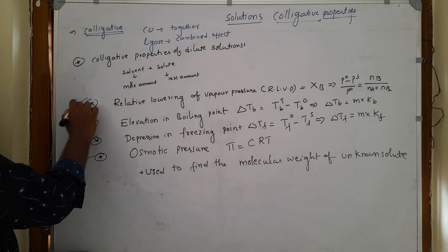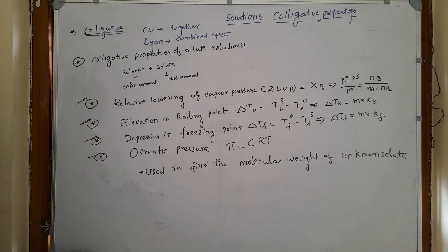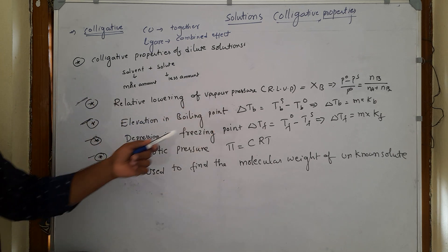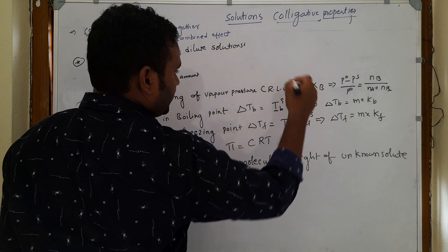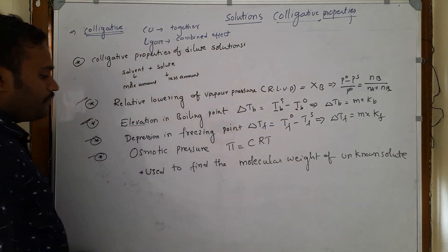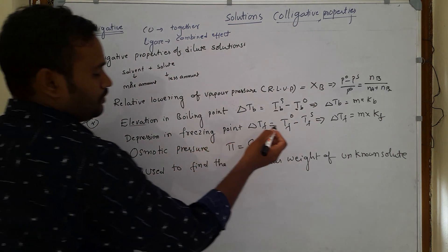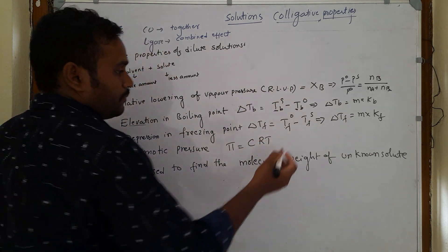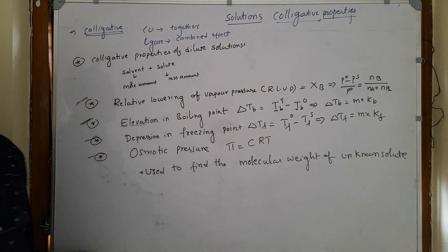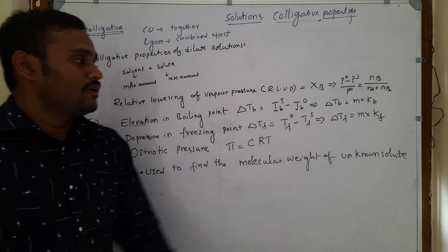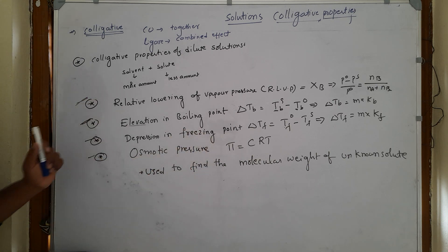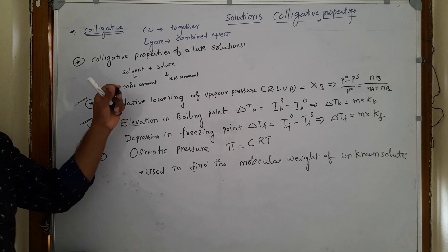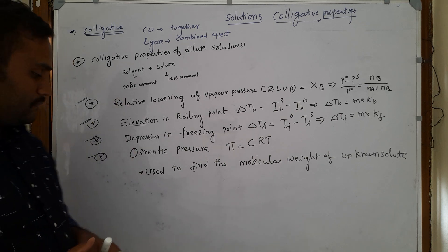There are four colligative properties. The first is relative lowering of vapor pressure (RLVP). The second is elevation in boiling point — meaning the boiling point of the solution is greater than that of the pure solvent. Depression in freezing point means the freezing point of the solution is less than the freezing point of the pure solvent, denoted delta Tf. The fourth is osmotic pressure. All these laws are based on Raoult's law.